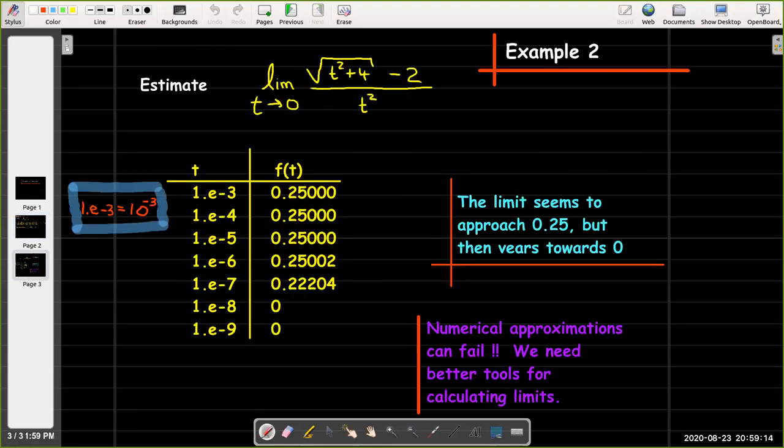So let's look at a second example which is a little bit more complicated. I'm going to take the limit as t approaches 0 of radical t squared plus 4 minus 2 all over t squared.